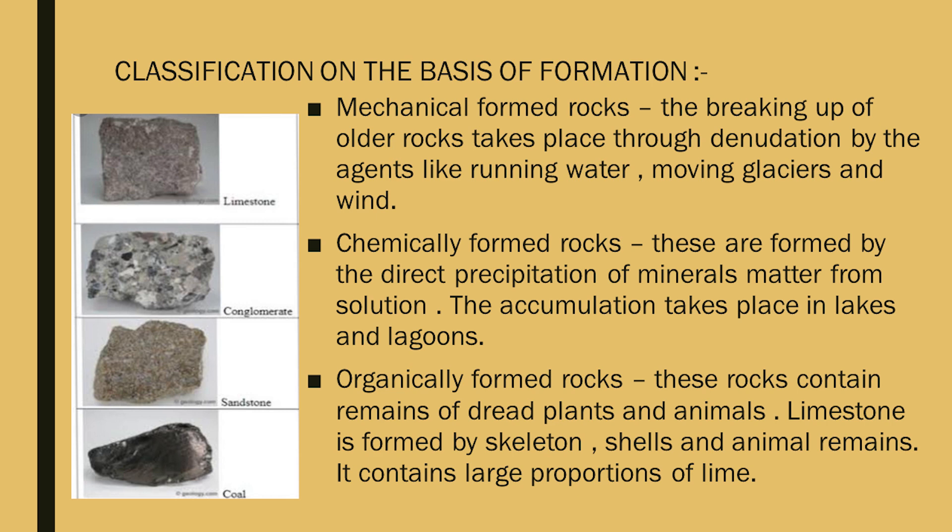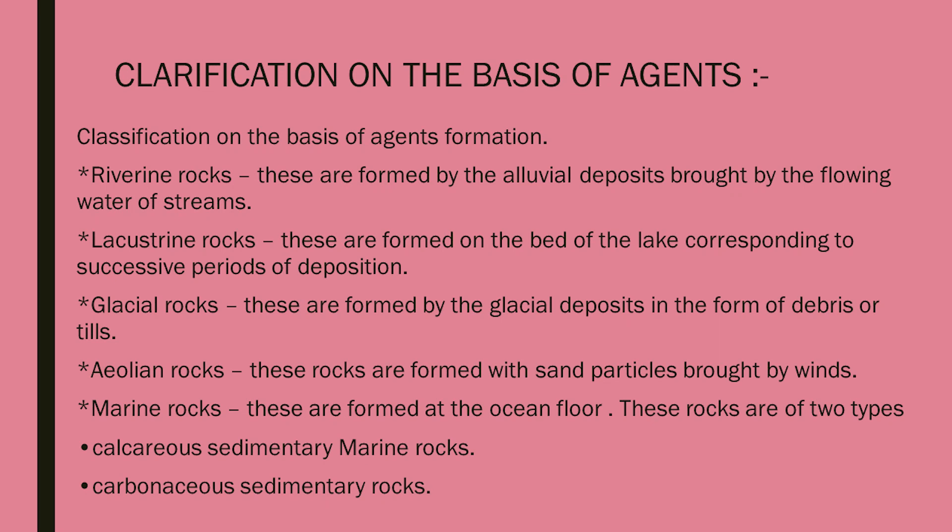Classification on the basis of agent of formation: fluvial rocks are formed by alluvial deposits brought by flowing water of streams. Lacustrine rocks are formed on the bed of a lake corresponding to successive periods of deposition. Glacial rocks are formed by glacial deposits in the form of drifts or tills. Aeoline rocks are formed with sand particles brought by wind. Marine rocks are formed at the ocean floor and are of two types: calcareous sedimentary marine rocks and carbonaceous sedimentary rocks.